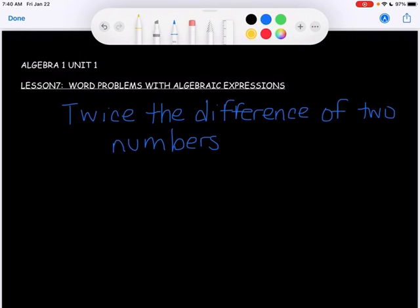Okay, twice is an operation. It means you're going to multiply by two. So I'm going to write two times. You could put the X for times, but since I use X for my variable, I try not to do that. The difference represents an operation of subtraction. I'm going to just put a subtraction sign there.